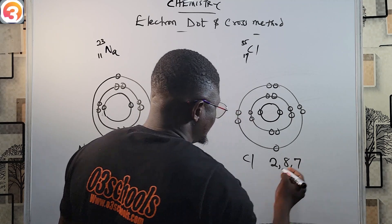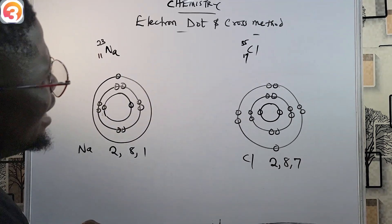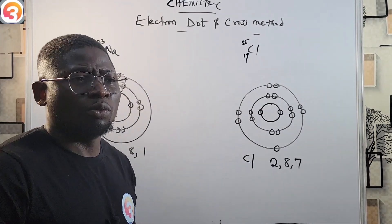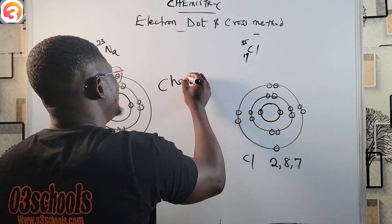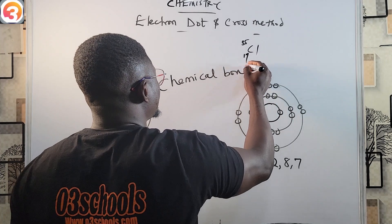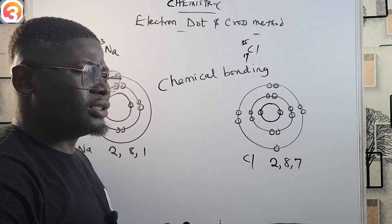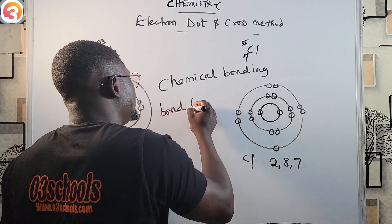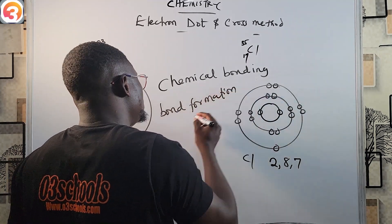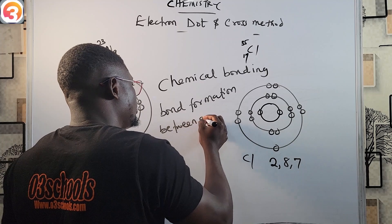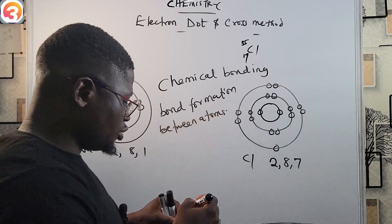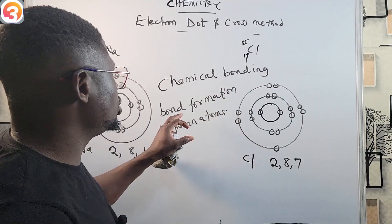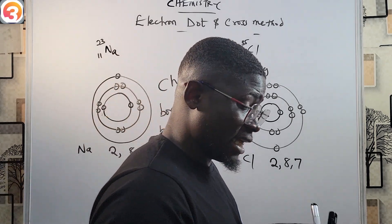Now that we have these diagrams, it is very important to state that structures like these help us to demonstrate chemical bonding and show bond formation between atoms. Electron dot and cross method structures are very useful in demonstrating chemical bonding and showing bond formation between atoms — keep that point by your side.